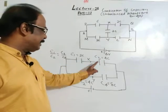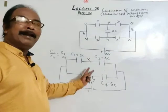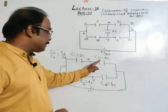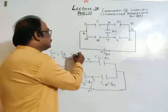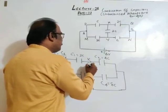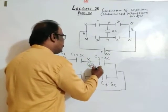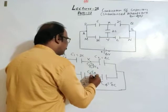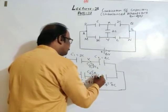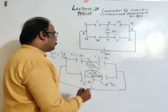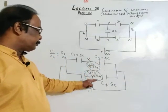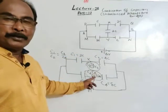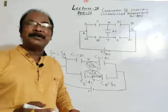After removing C5, C1 and C3 are in series, and C2 and C4 are in series. Then these two series branches are in parallel. We add them to find the equivalent capacitance — just as we have discussed previously.